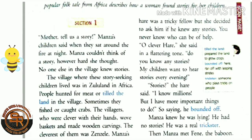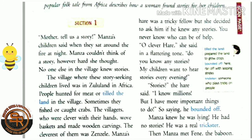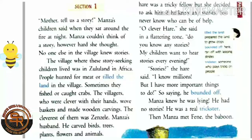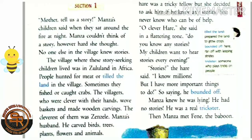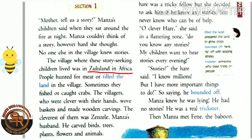Manza's children said, 'Tell us a story,' when they sat around the fire at night. Manza couldn't think of a story, however hard she thought. Manza is the name of the mother who is going to tell stories to her children. No one else in the village knew stories. The village where these story-seeking children lived was in Zulu Land in Africa.